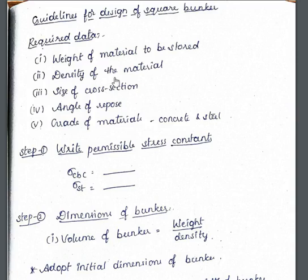Welcome. Let us now see the guidelines for design of square bunkers. This is also useful for design of rectangular bunkers. The required data we initially need includes: weight of the material to be stored, density of the material, size of the cross section, angle of repose, and grade of materials — concrete and steel — we are using.